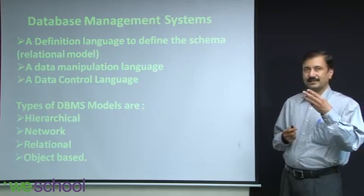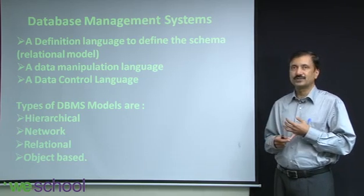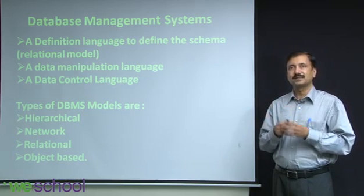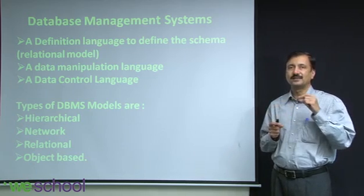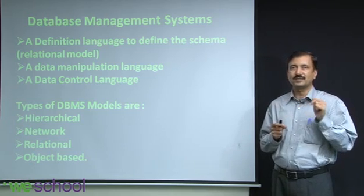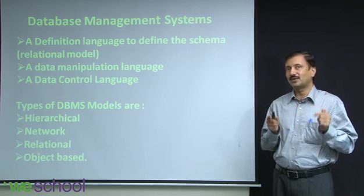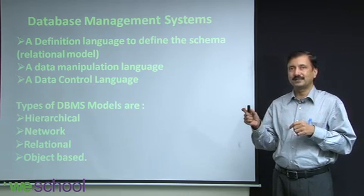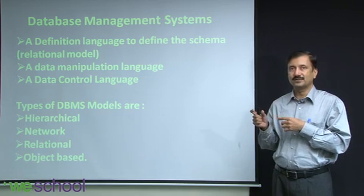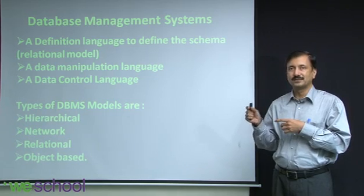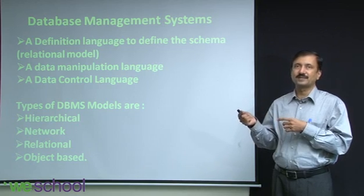Databases consist of three basic functionalities. One is the Data Definition Language, which allows you to indicate to the database the structure — what tables exist, what columns are in each table, the width of each column, and the nature of the data. For example, a column called 'name' is text data, perhaps 40 characters wide. A salary column might be numeric — a real number or integer with two decimal digits.